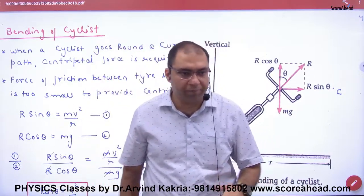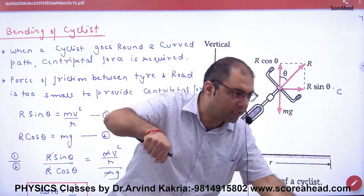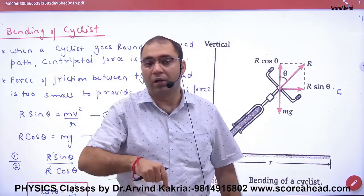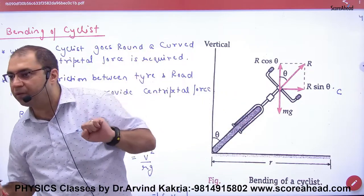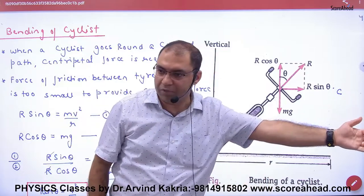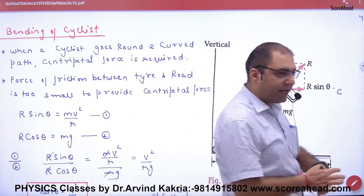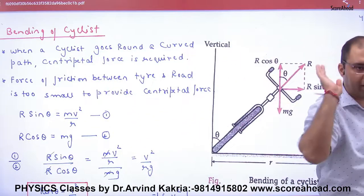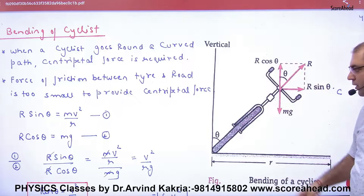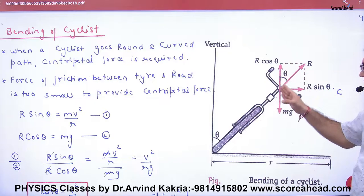When I have to go around in a circle, if I bend, the bending will be toward the center of the circle. So if I bend like that, this bending will again be toward the center of the circle. The two components of R are: R cos theta (vertical component) and R sin theta (horizontal component, pointing toward the center).